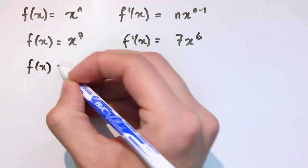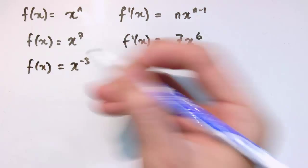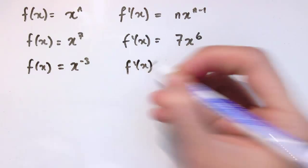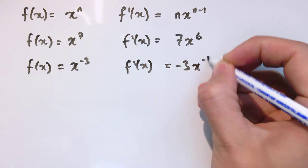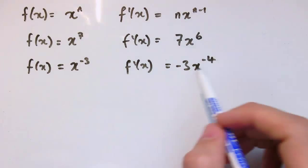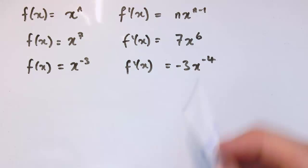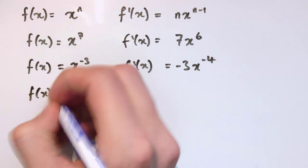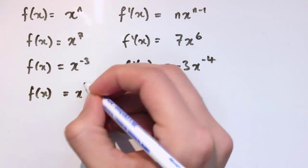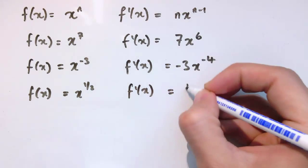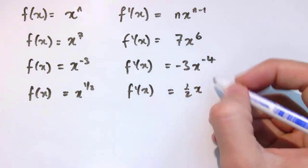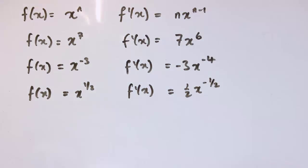This works with negative values as well, so if I had x to the minus 3, that would give me f'(x) is minus 3x to the minus 4, because minus 3 minus 1 is minus 4. Or if I had f(x) equals x to the half, that would give us f'(x) is 1 half x to the, now 1 half minus 1 is minus 1 half.